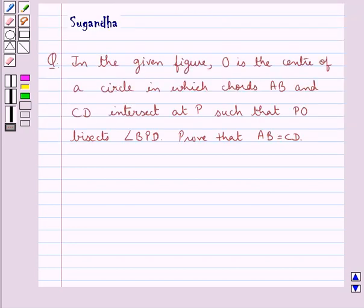O is the center of a circle in which chords AB and CD intersect at P such that PO bisects angle BPD. Prove that AB is equal to CD.